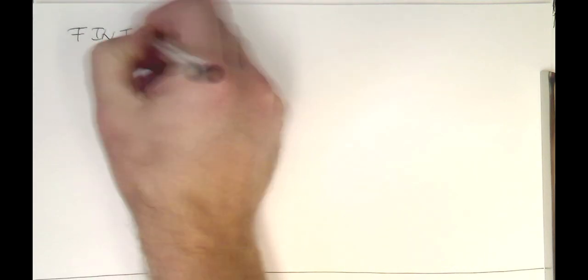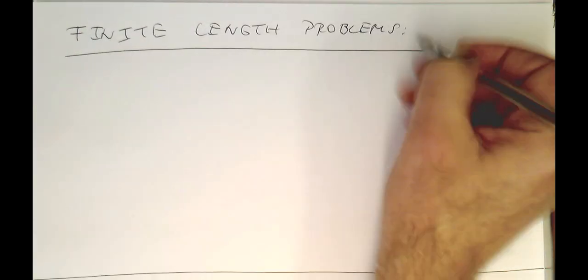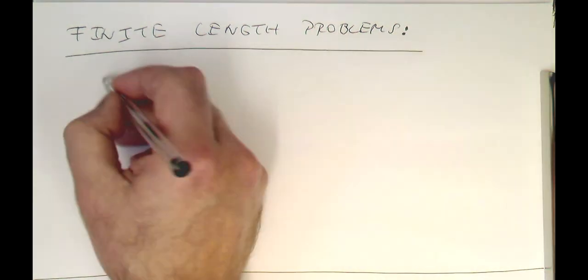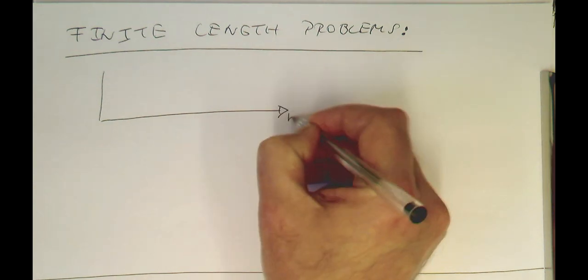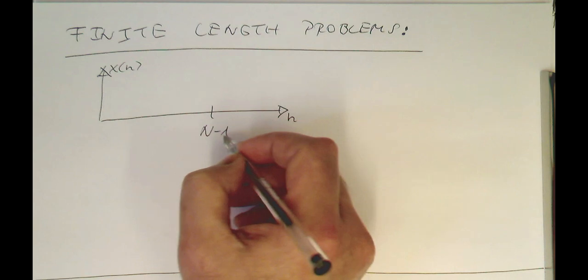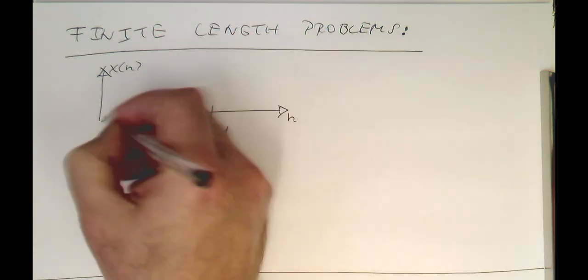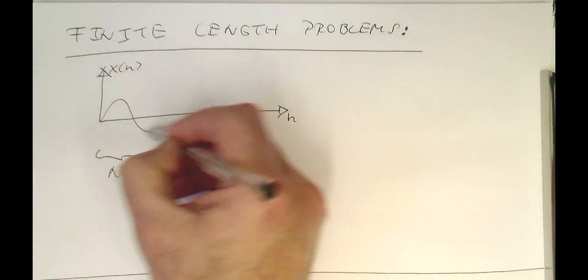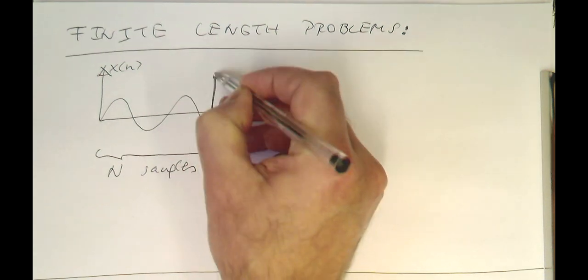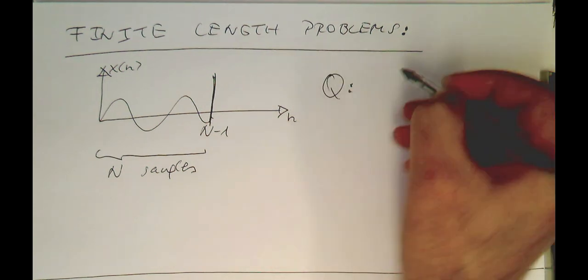Let's look at finite length problems. Our DFT is defined with index n and sequence x of n, defined only up to n minus 1, so that we have a sequence of n samples. If we have a signal, it will just be chopped off at that point. The question is: what is the impact on the frequency spectrum?